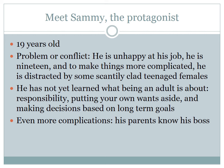He is, again, 19. And to make things even more complicated, he becomes distracted by some scantily clad teenage females. He has not yet learned what being an adult really is about — responsibility, putting your own wants aside, making decisions not based on immediate desires but on long-term goals. And even more complicated for poor Sammy, his parents know his boss. Whatever action he takes, his boss is going to tell his parents, and the whole town is probably going to be talking about it.